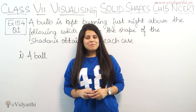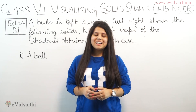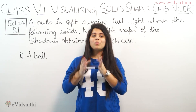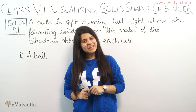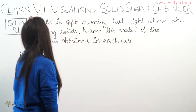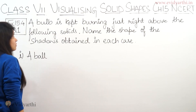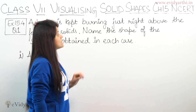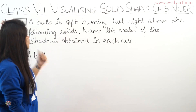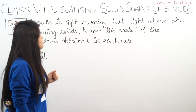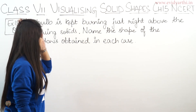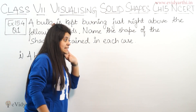Hello everyone, this is Mansi from EV Dhyanthi. Coming to question number 1, exercise 15.4. In this question, a bulb is kept burning just right above the following solids. Name the shape of the shadows obtained in each case.